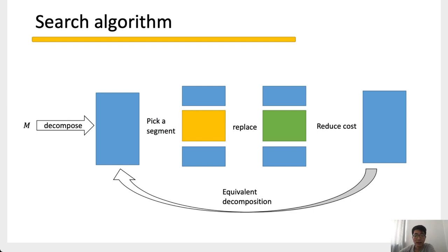Using the reduction algorithm as a subroutine, a search algorithm is devised. We first decompose the given matrix M using the hybrid method, then pick a segment from the decomposition, multiply those type-3 matrices to get an invertible matrix, and decompose it again using the hybrid method to get an equivalent decomposition. The reduction algorithm is then applied to reduce the cost, and we repeat this procedure many times until we find a good implementation.